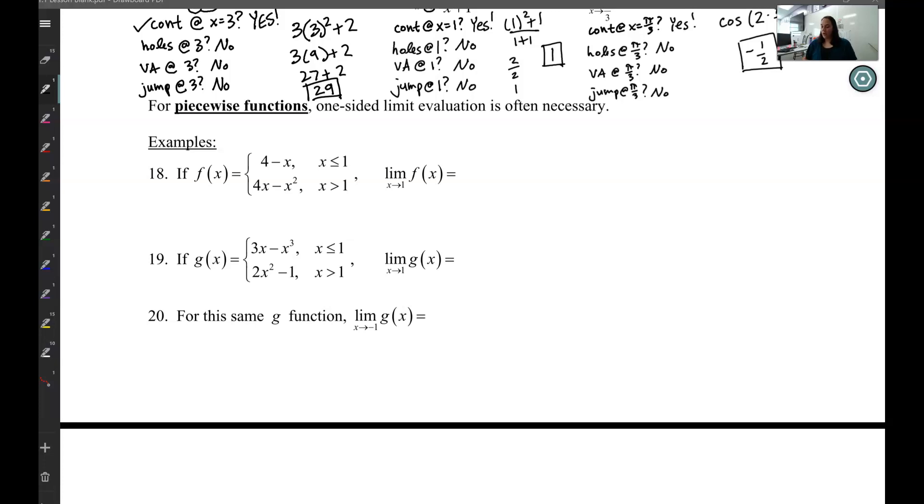Welcome back. When we talk about piecewise functions, the most common problem with continuity is often at the point where they meet. There might be a jump, meaning the left-hand side of our piecewise doesn't exactly match up with the right-hand side.